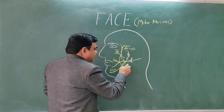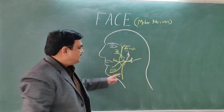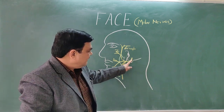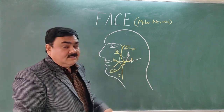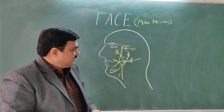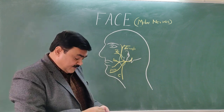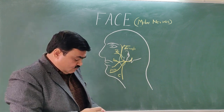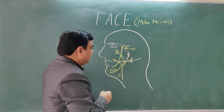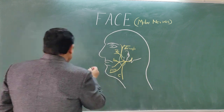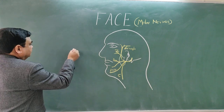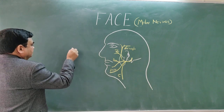Here, sometimes this nerve is compressed at the site of its exit — the stylomastoid foramen. If this nerve is compressed, then what happens...